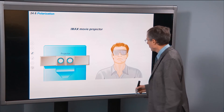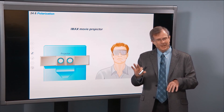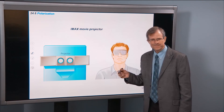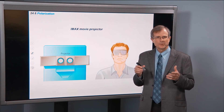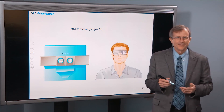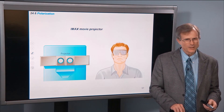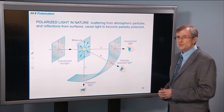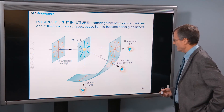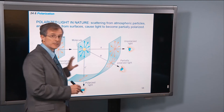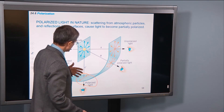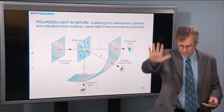IMAX movie projectors have two different polarizations — one for the right eye, one for the left eye — and the projector takes advantage of that. When you watch with the special glasses in movie theaters, you get to see 3D images, because what's presented to your left eye is different from what's presented to your right eye, and you get the sense of depth perception in a movie that otherwise wouldn't have any. In nature, light scattered from atmospheric particles and reflected from surfaces is also partially polarized — sunlight striking atmospheric molecules or a surface produces polarized light.